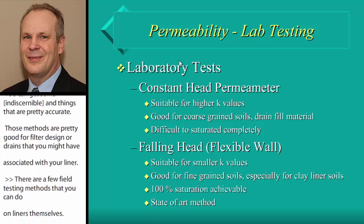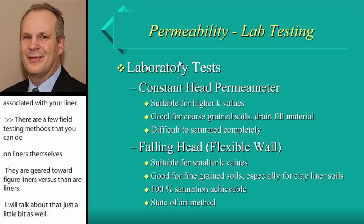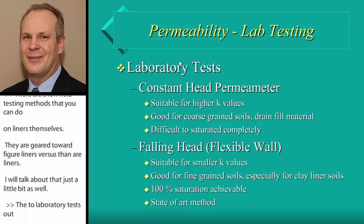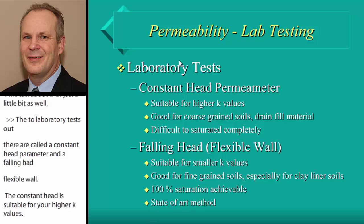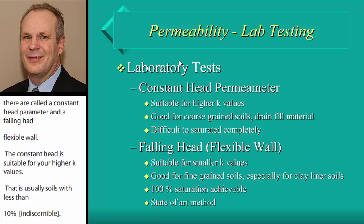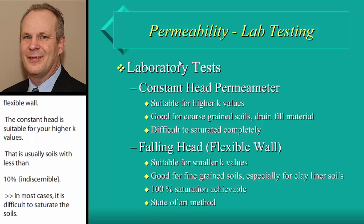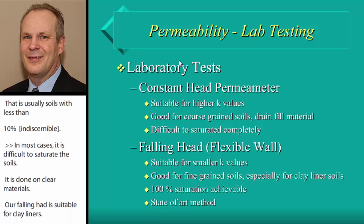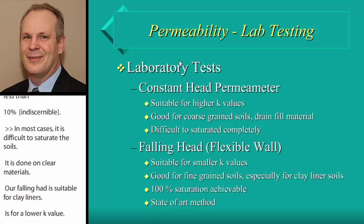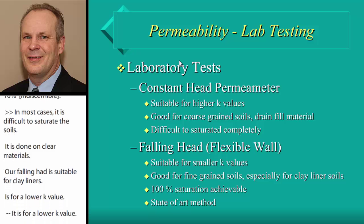The two ASTM laboratory tests are the constant head permeameter and the falling head flexible wall permeameter. Constant head is suitable for high-K soils with less than 10% fines passing the No. 200 sieve, but it's difficult to saturate fine-grained soils this way. The falling head flexible wall test is suitable for clay liners with lower K values — targeting 10⁻⁷ to 10⁻⁶ cm/s — achieves 100% saturation, and is considered the state-of-the-art procedure.